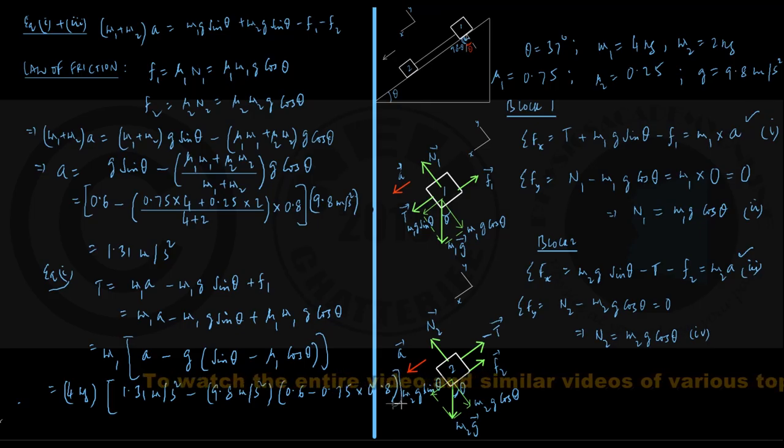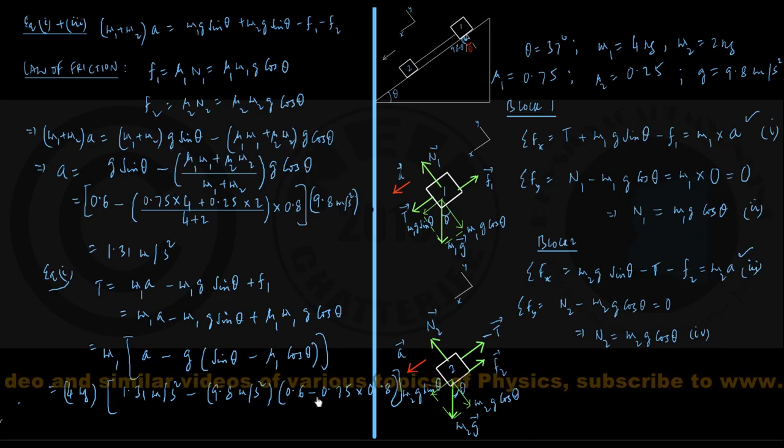As you can check, this quantity inside this round bracket, this is just cancelling out, this is coming out to be 0. So this term vanishes, I am just left with 4 kg into 1